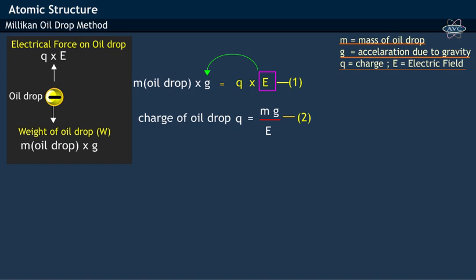Millikan has found out that electrical charge on oil droplet was equal to the integral multiple values of −1.602 × 10⁻¹⁹ coulombs. That is q equals to n × e. Here, q refers to the charge, while n is the integer, which takes values 1 to 4.